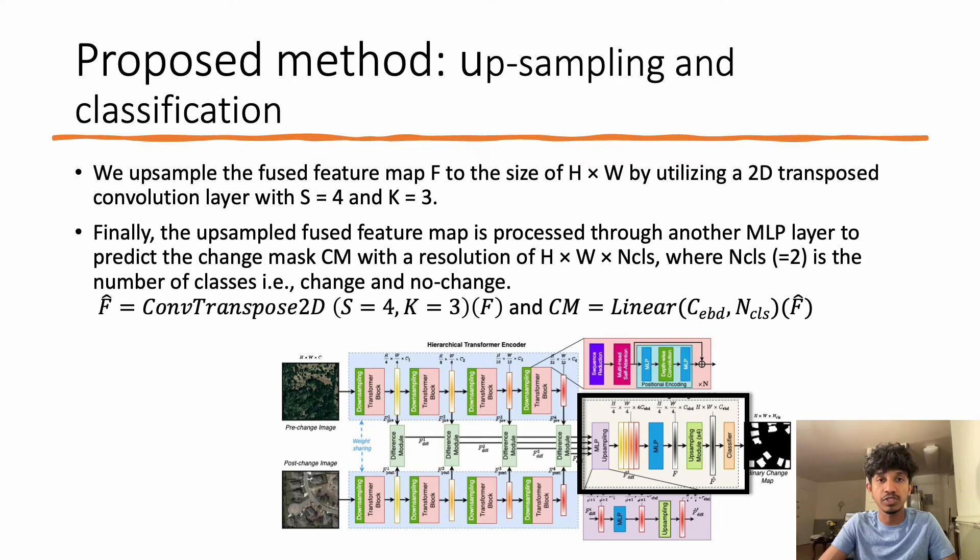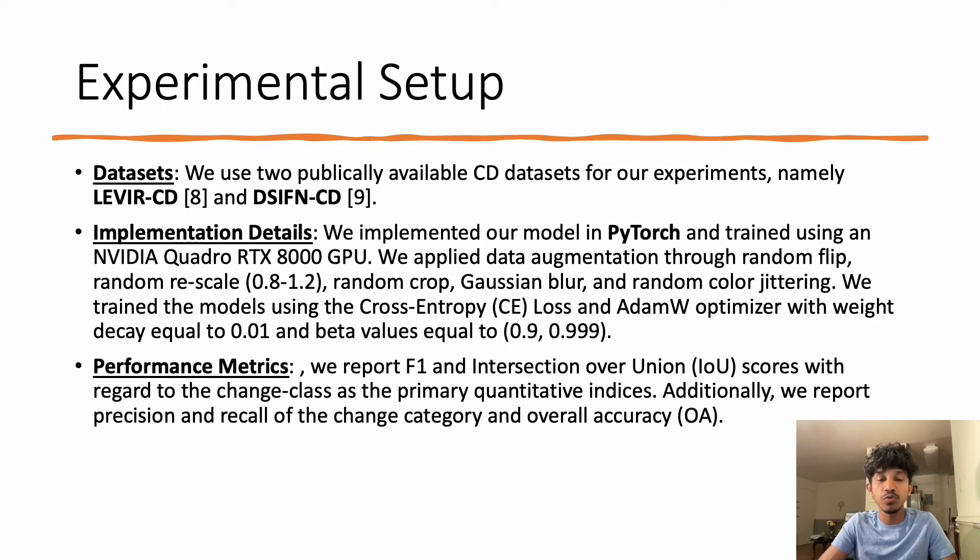We used two publicly available change detection datasets for our experiments, namely LEVIR-CD and DSIFN-CD. We implemented our model in PyTorch and trained using an NVIDIA Quadro RTX 8000 GPU. We randomly initialized the network.